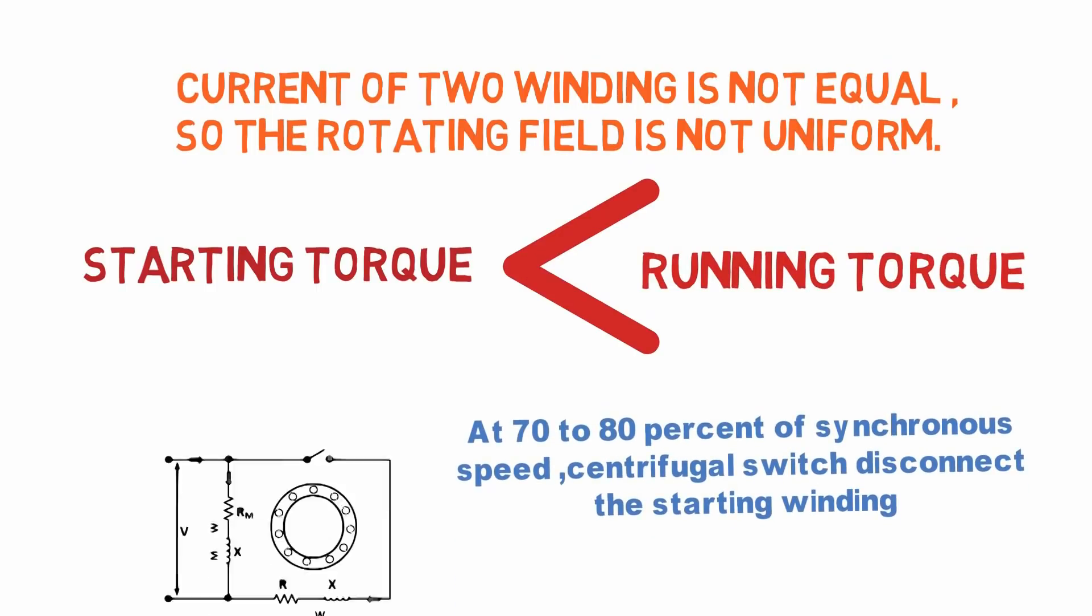After getting 70 to 80 percent of synchronous speed, the starting or auxiliary winding is disconnected from the supply by using this centrifugal switch.